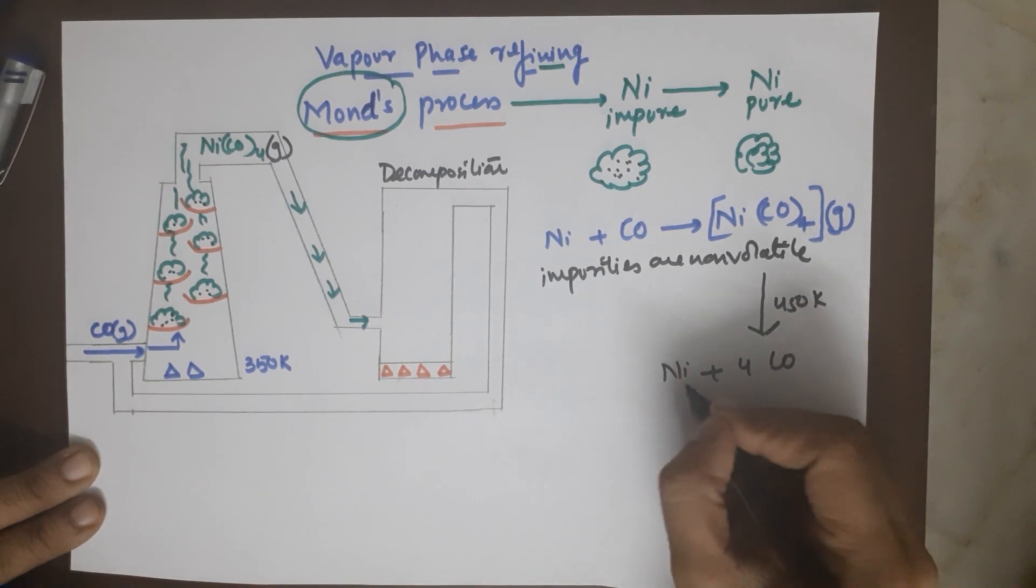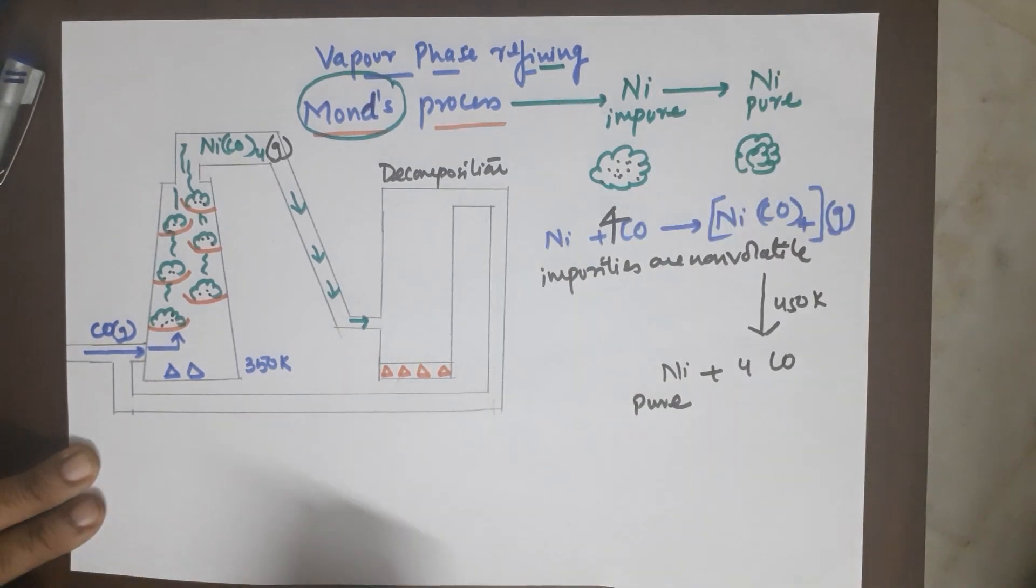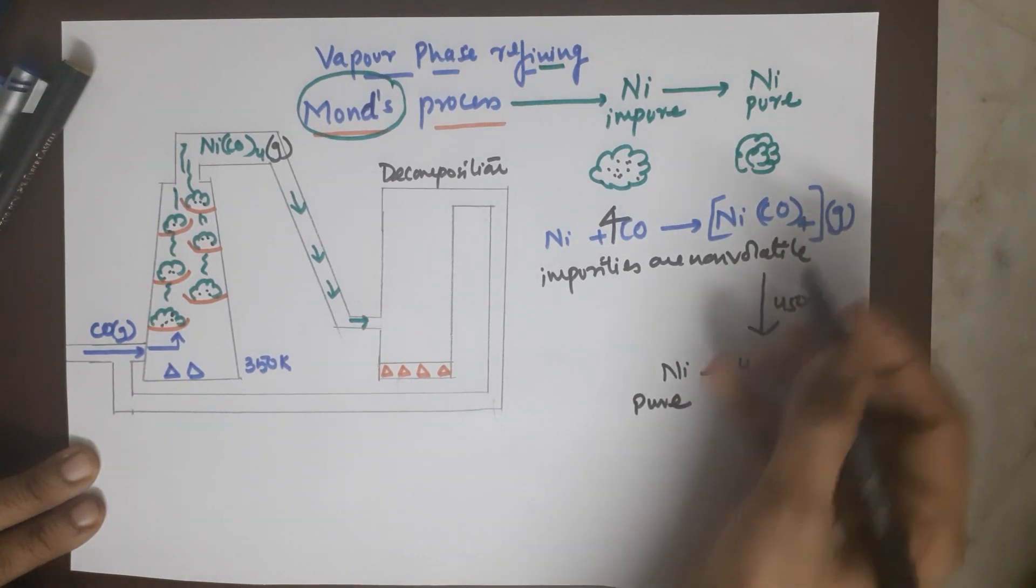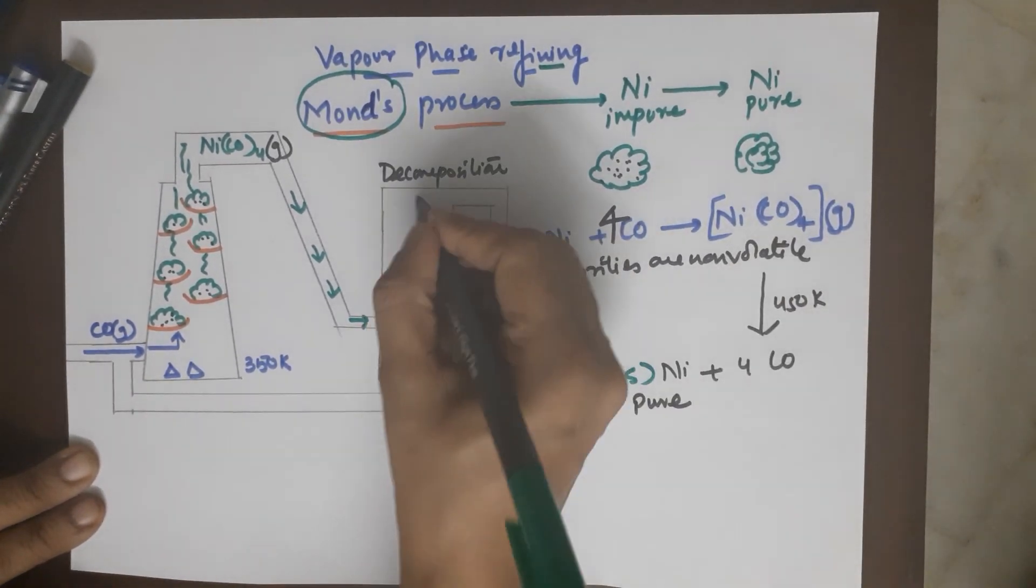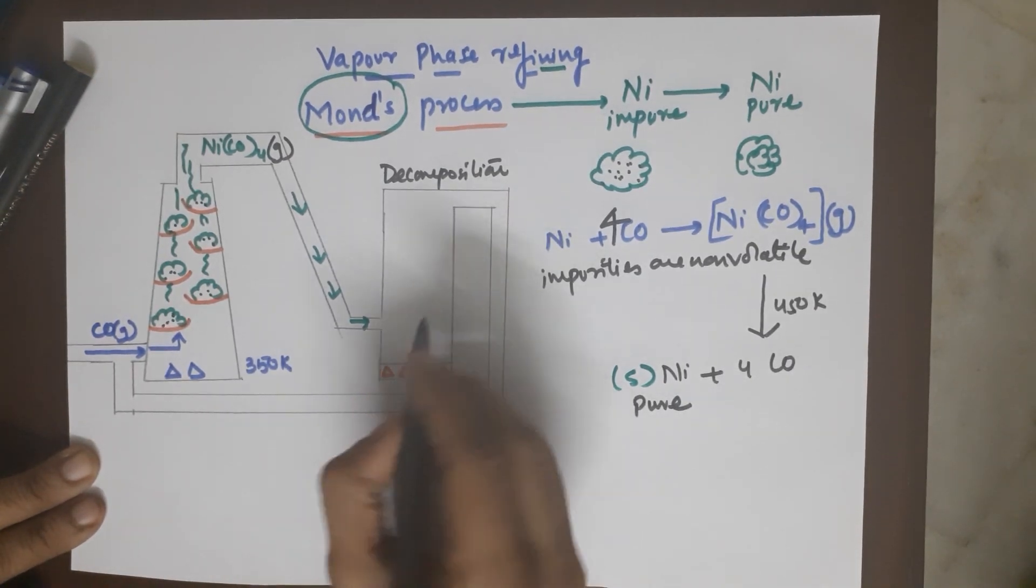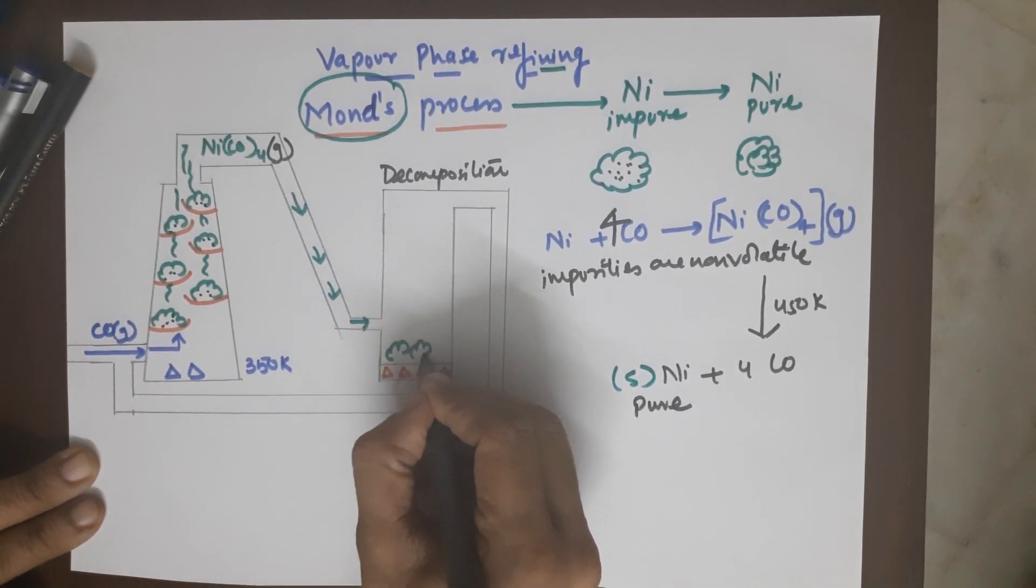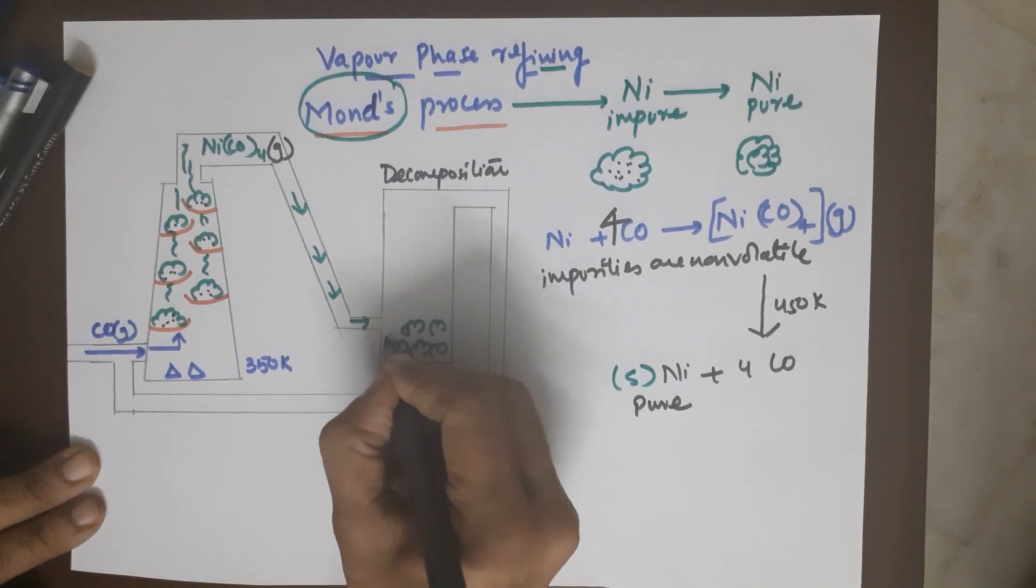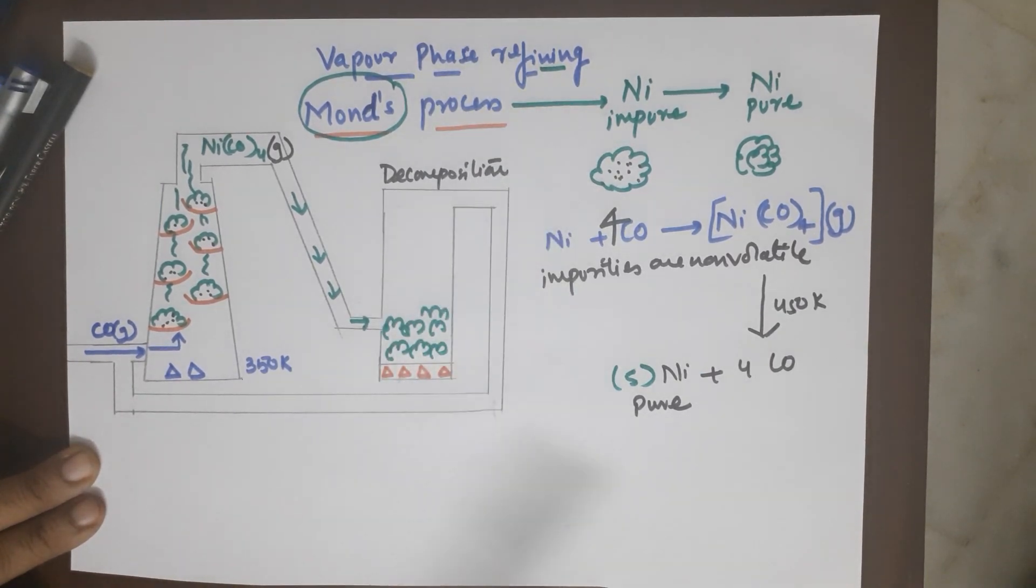This causes nickel tetracarbonyl to decompose to give you back the reagent and pure nickel. So you require four moles of carbon monoxide to react with nickel and form nickel tetracarbonyl which is gaseous. You get your pure nickel in this chamber. So when this compound moves here, this undergoes decomposition. Your pure nickel is what settles down here, and what is left is your CO gas.